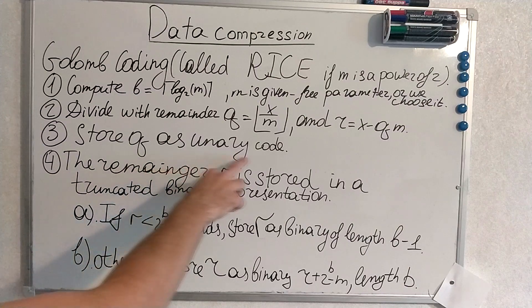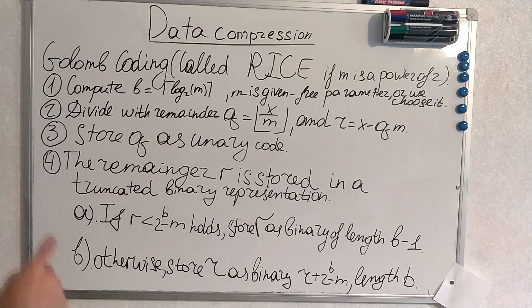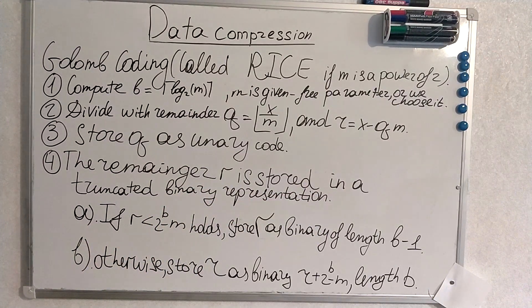We store q as unary code. And now we look at the reminder. The reminder r is stored in a truncated binary representation. It means that it will be a binary number but of some length.